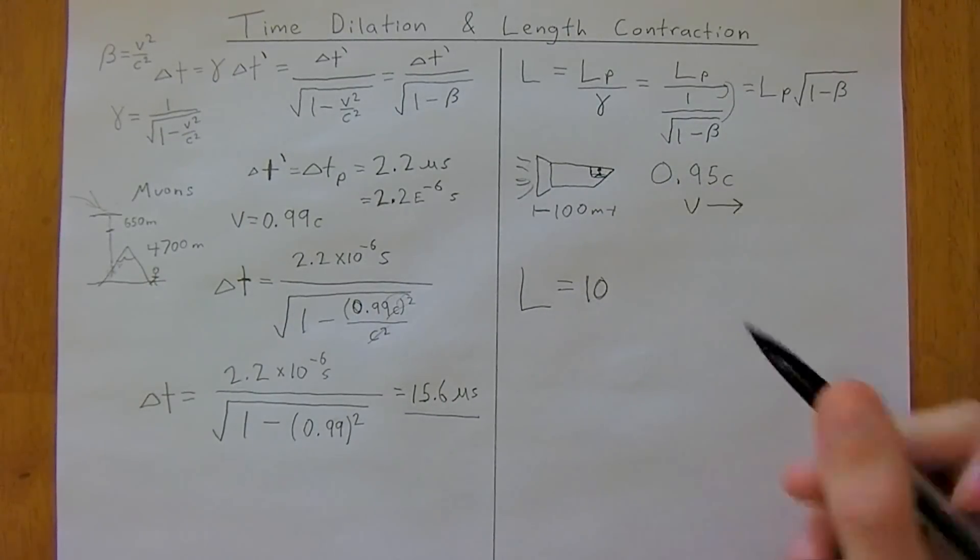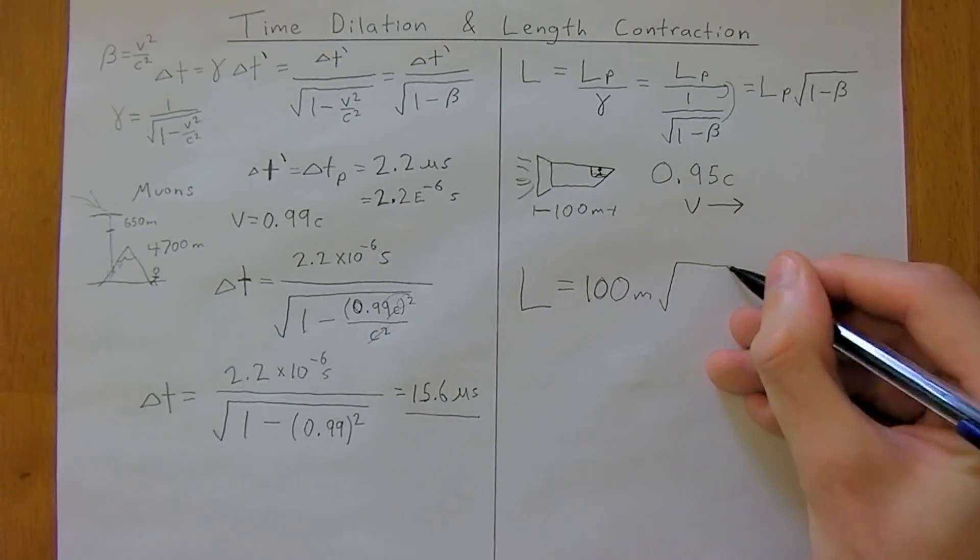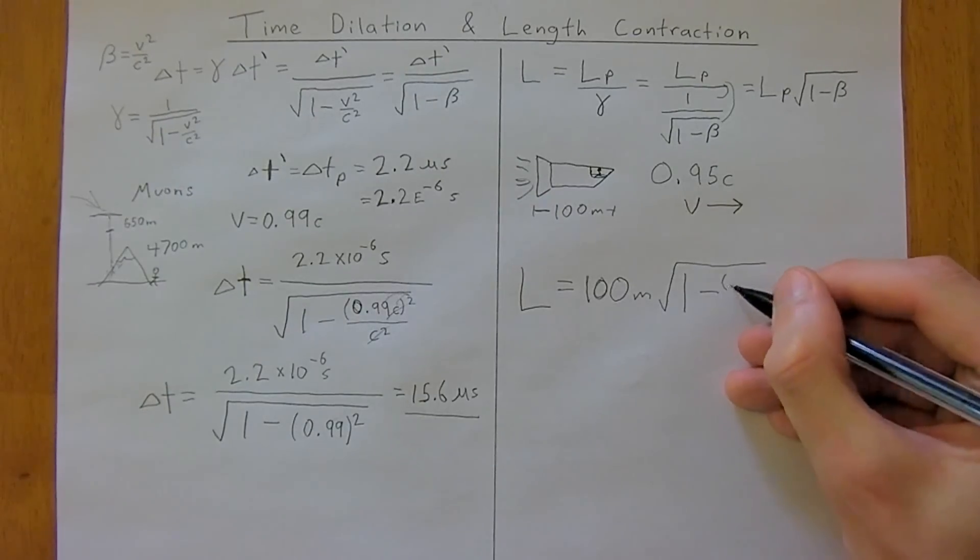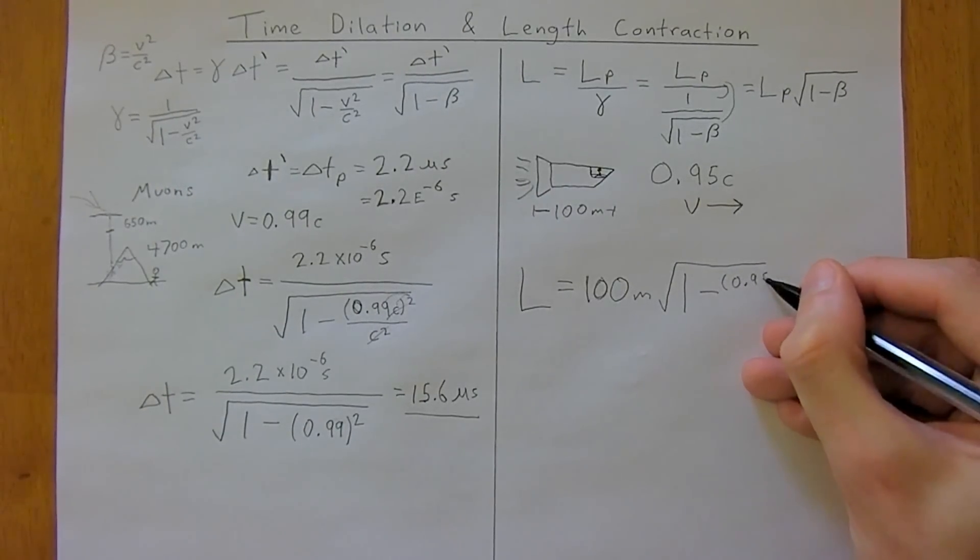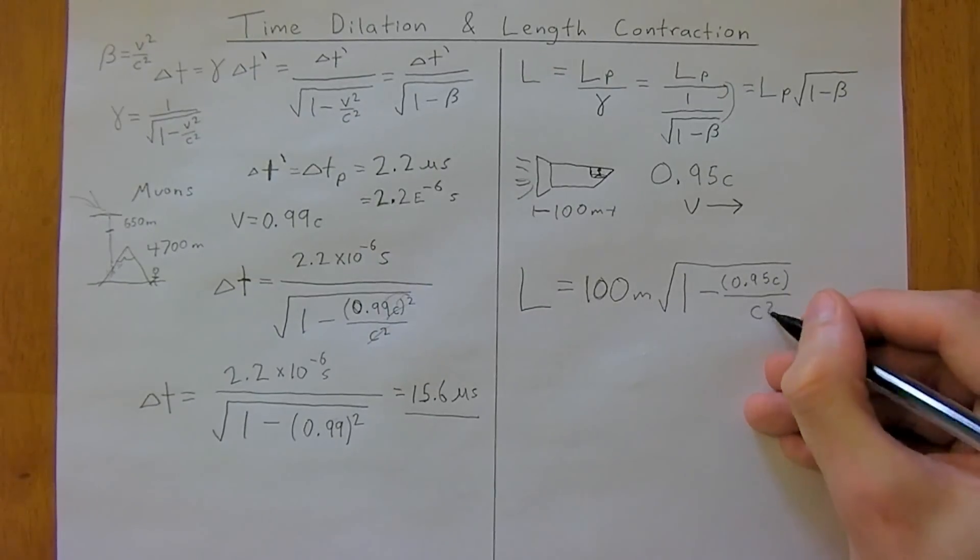moving at that velocity, so, the observer in the spaceship, is 100 meters, times the square root of 1 minus v squared, which is 0.95c, divided by c squared,